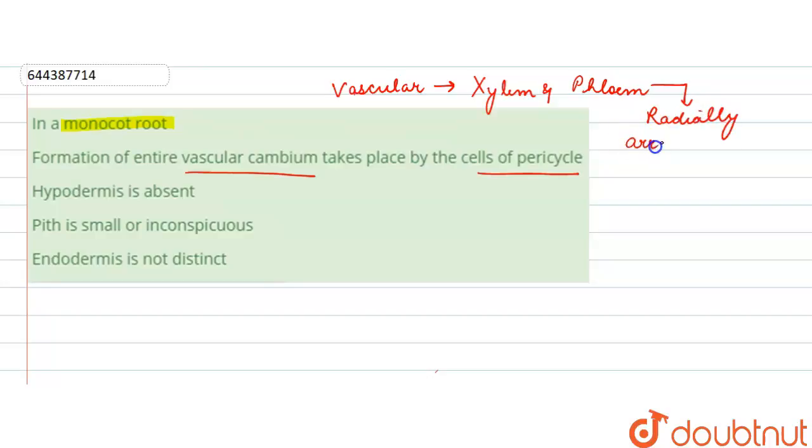That is, they are arranged in a circle, radially arranged with different radii. So the vascular cambium in a monocot root is absent. Therefore, this statement will be incorrect.